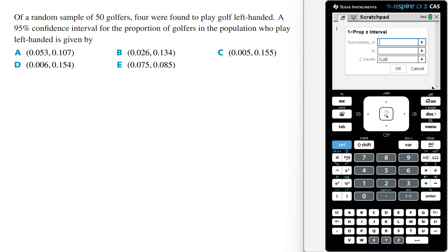For this question, x is going to be the number of golfers who are left-handed, and so we're told that this is 4. And the sample size, n, was 50. We want the 95% confidence interval, so this is going to be 0.95. And then click on OK.